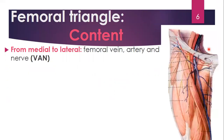The major contents of the femoral triangle are the femoral vein, the femoral artery, and the femoral nerve. For short, we call it VAN — V for femoral vein, A for femoral artery, and N for femoral nerve — from medial to lateral.